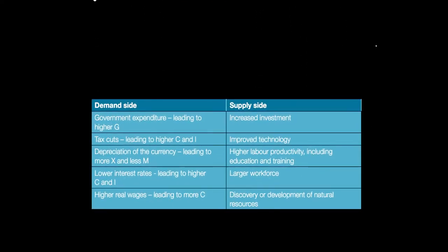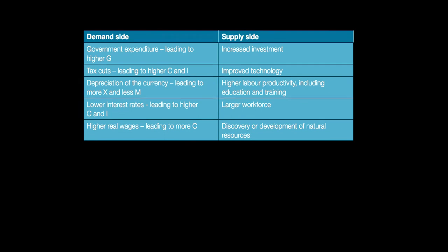Let's explore some of the causes of both demand-side and supply-side economic growth. On the demand side, any rise in C, I, G, or X minus M can cause the AD curve to shift to the right and therefore can cause actual economic growth to happen.